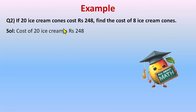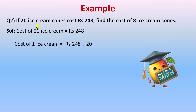The first statement: cost of 20 ice cream cones is rupees 248. The cost of one ice cream cone will be 248 divided by 20. We can simplify — 248 by 20: four 60-twos are 248, so the fraction is 62/5 rupees, which is the cost of one ice cream cone.